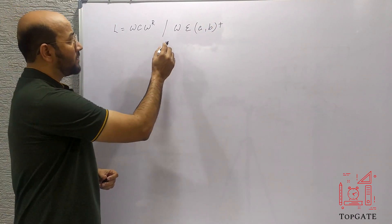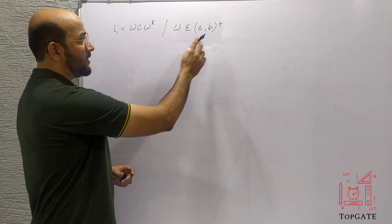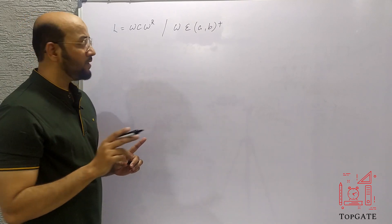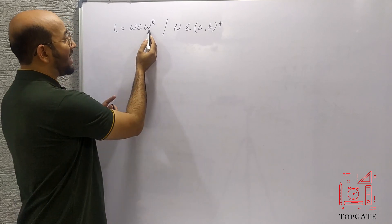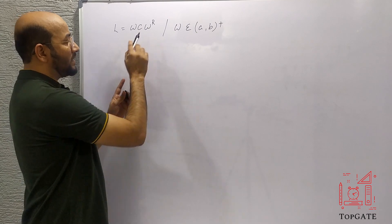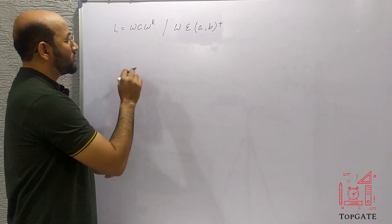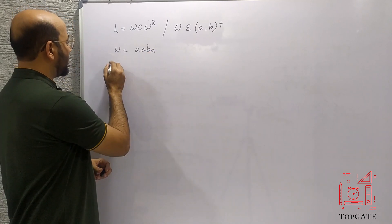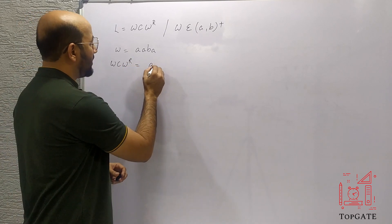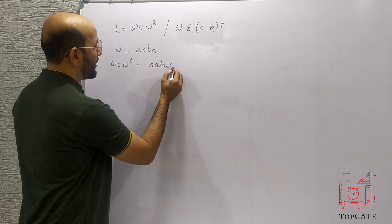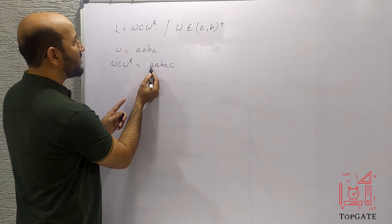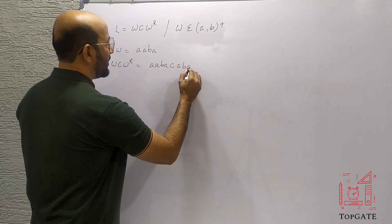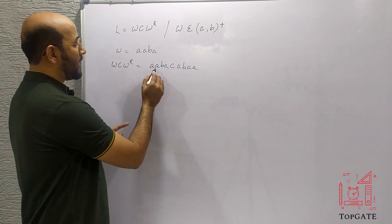This means W is a combination of A and B but excluding null — since we have + here, there is no null. So in W I can have any combination of A and B, then we have C, and then W^R is exactly the reverse of W. For example, if W equals AABA, then WCW^R is AABA C ABAA — the mirror image of W after C.